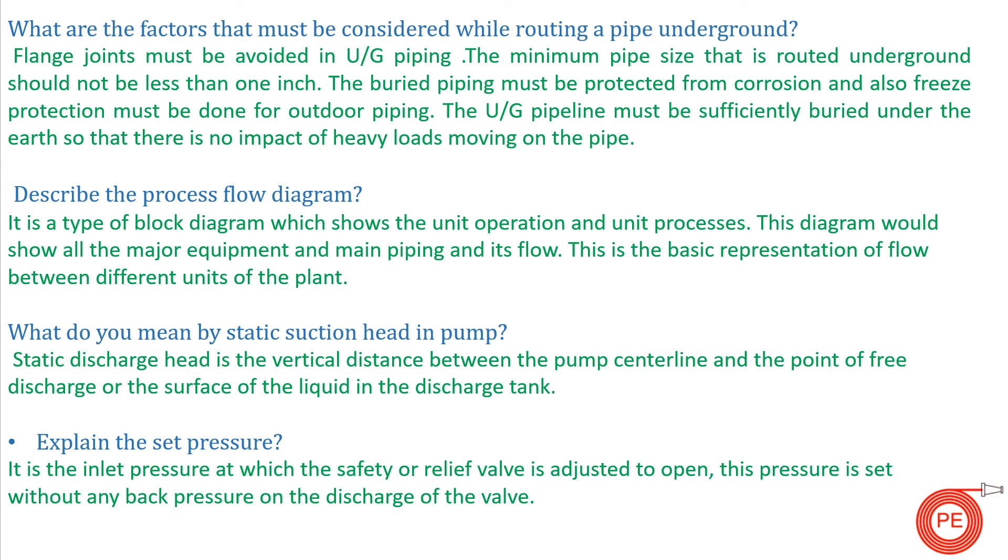What are the factors that must be considered while routing pipe underground? Sometimes we have to do underground piping because we don't have pipe racks there or maybe the line is not so critical. In underground piping, we must avoid flange joints because it will be very difficult to tighten the flange in the underground portion, and if there is a gasket leakage, your pipe will leak underground.